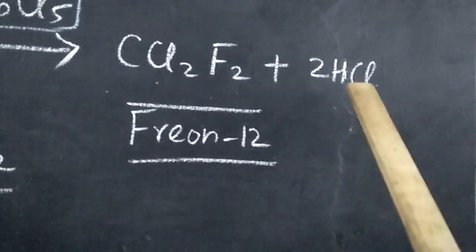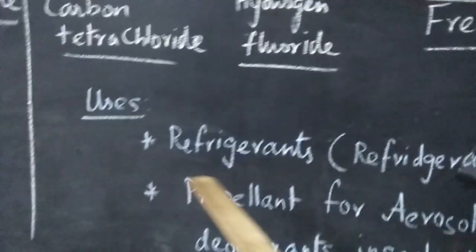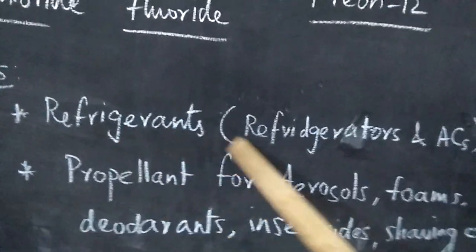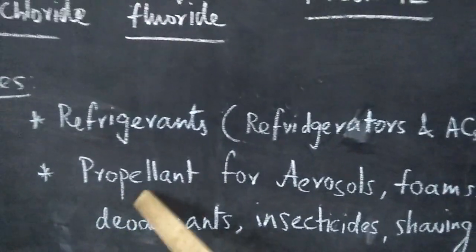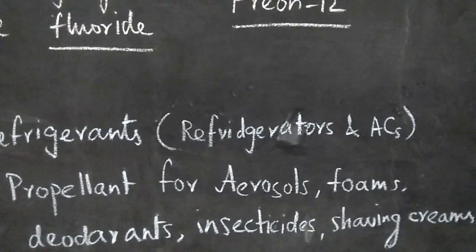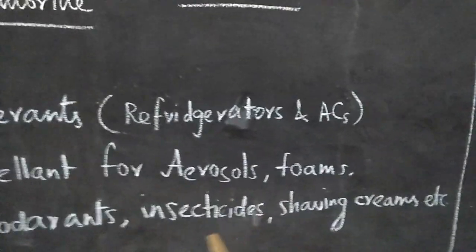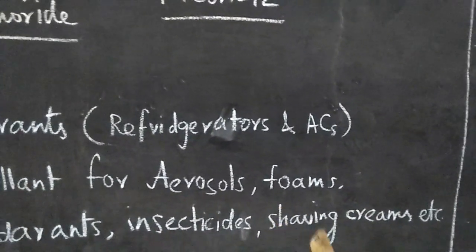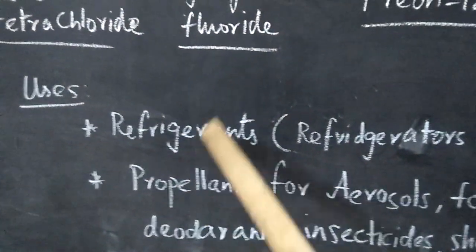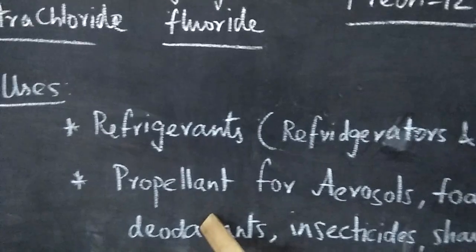So Freon-12 is formed, the by-product is 2 HCl. What is the use of Freon-12? It is used as a refrigerant in refrigerators and air conditioners. It is used as a propellant, that is to give the throw of the aerosols, foams, deodorants, insecticides, shaving creams, etc. So 2 important uses: refrigerant and propellant.